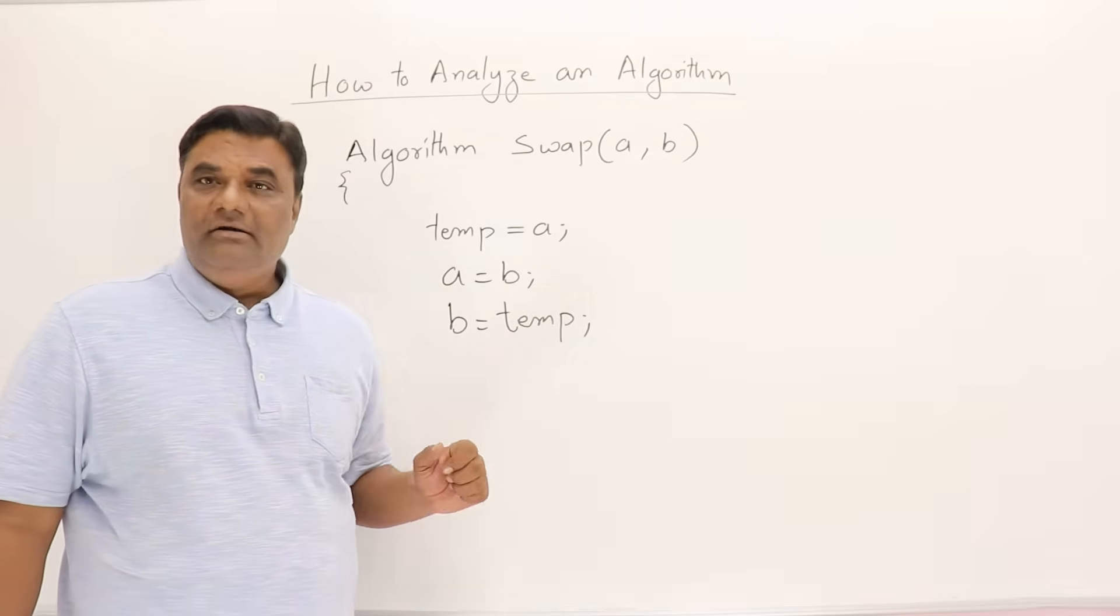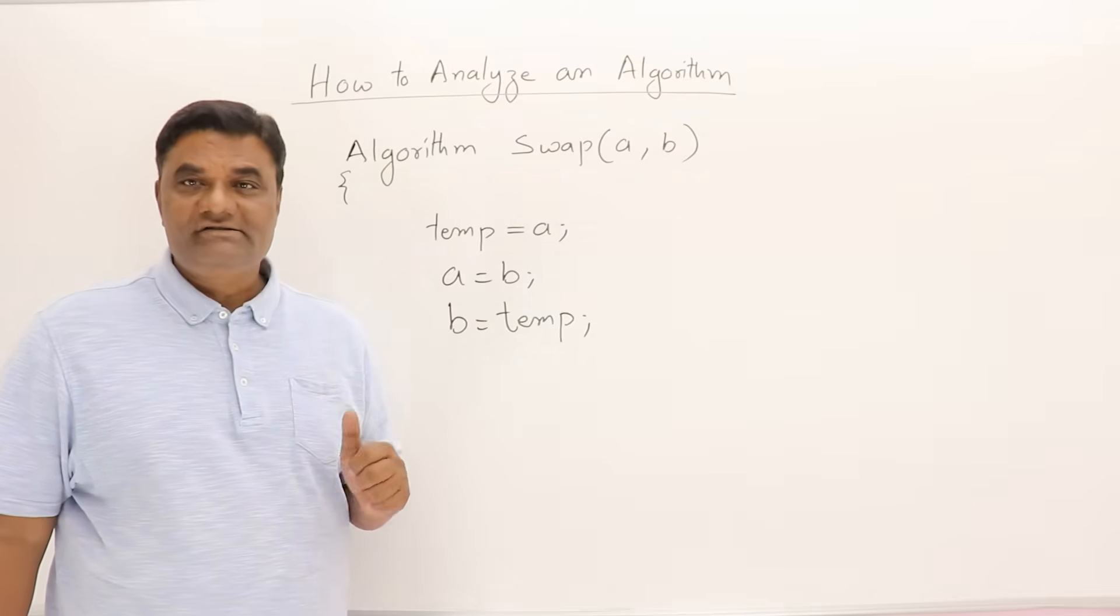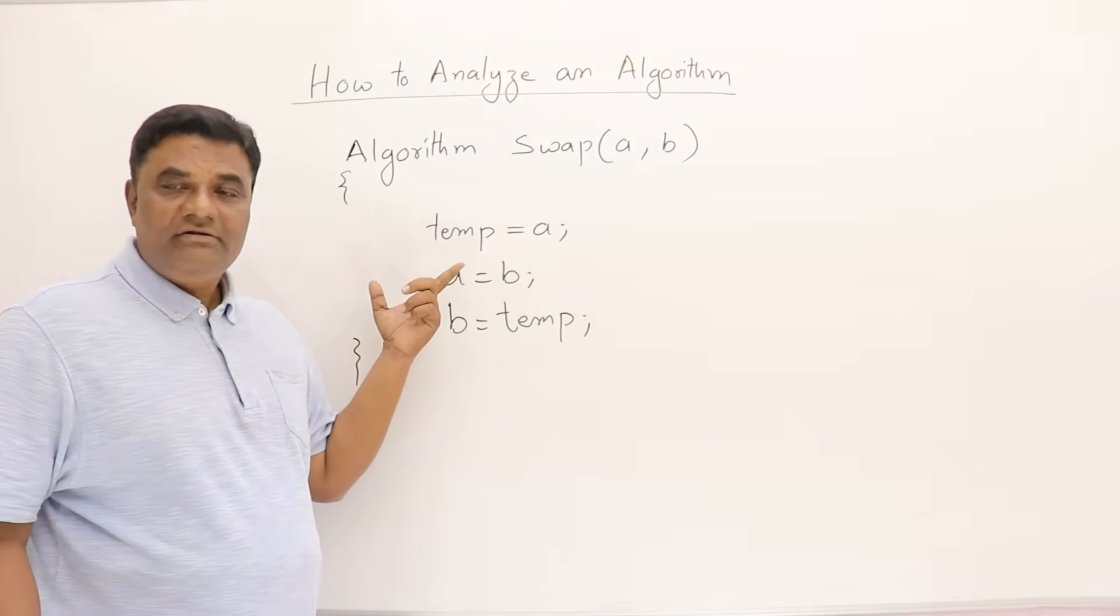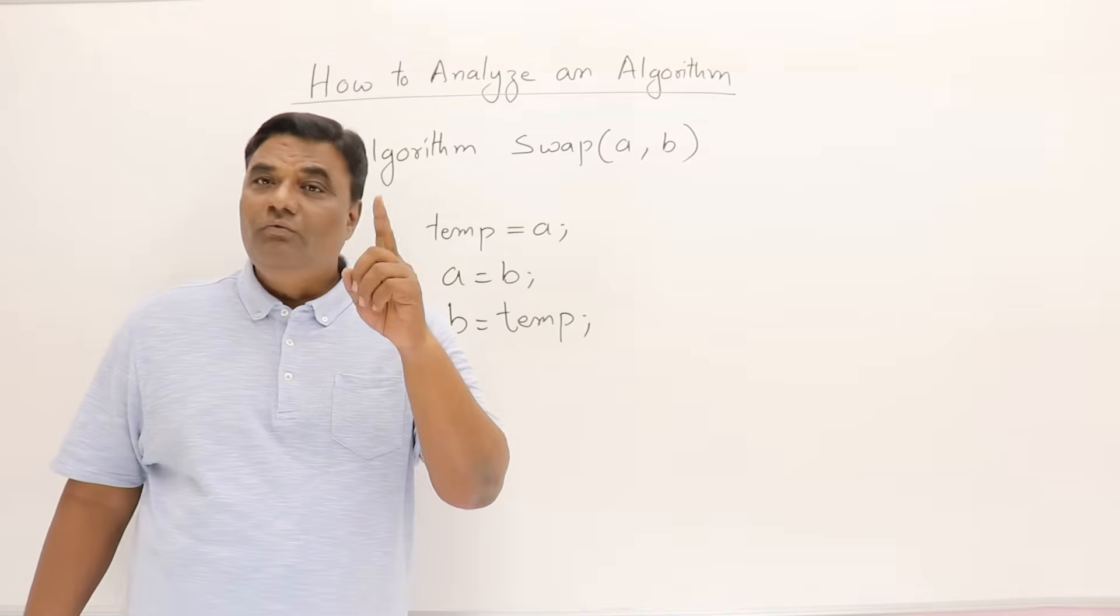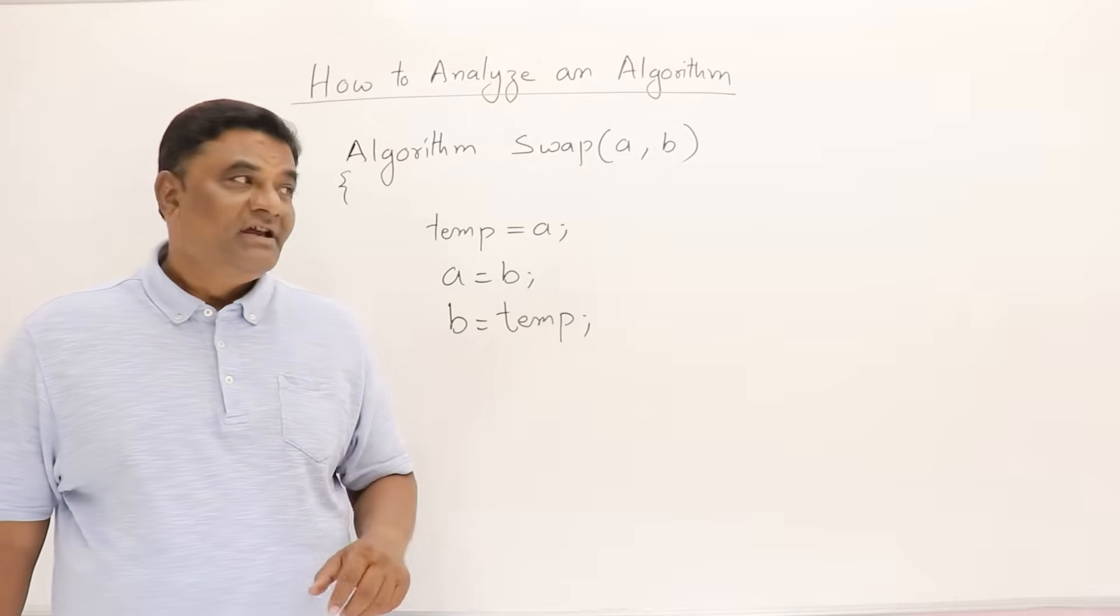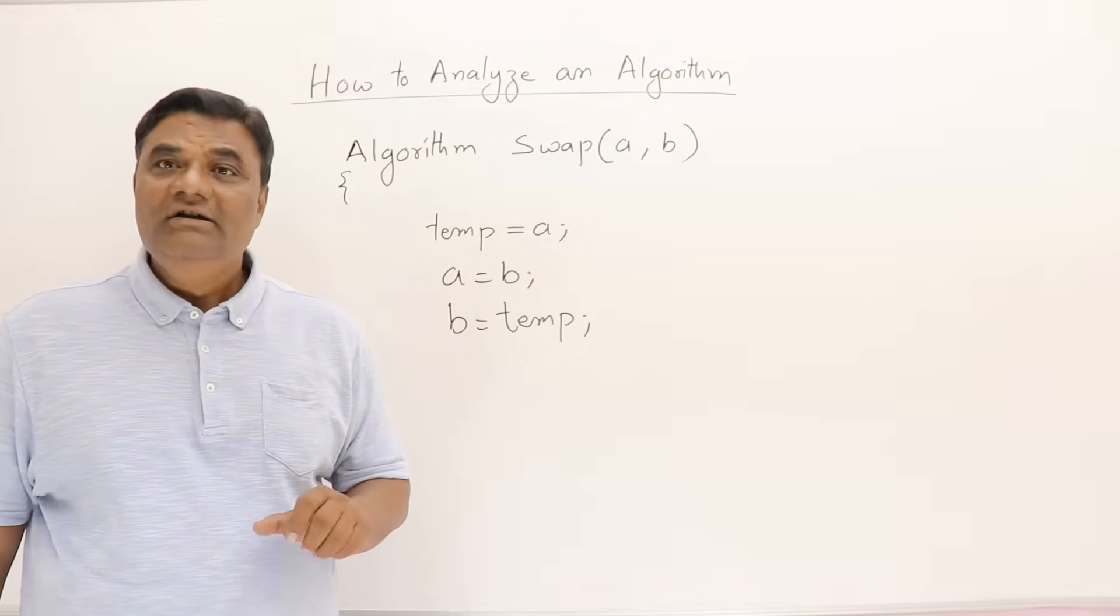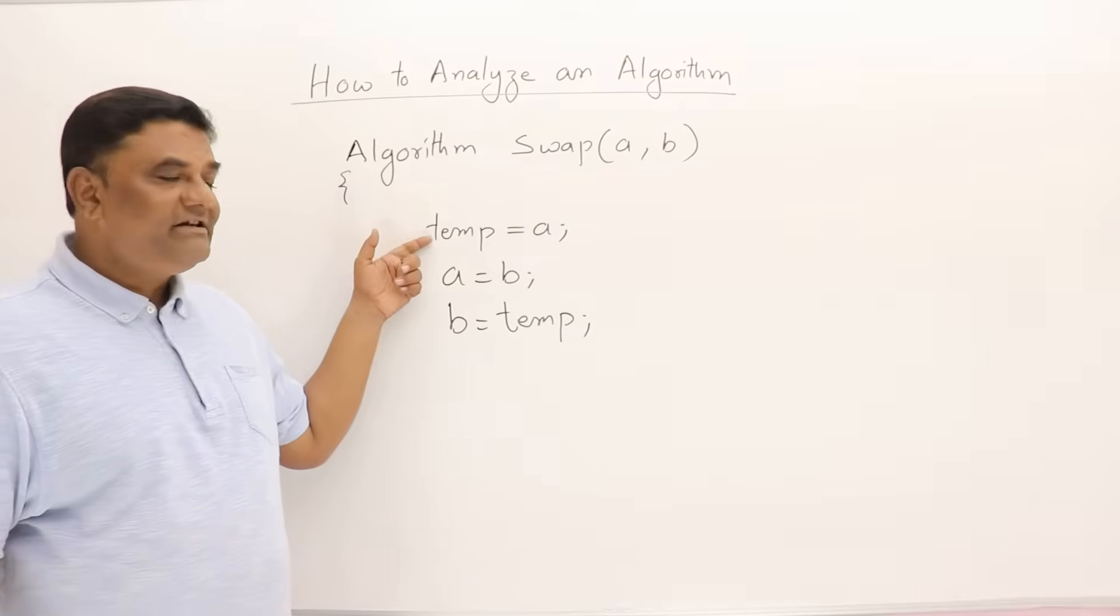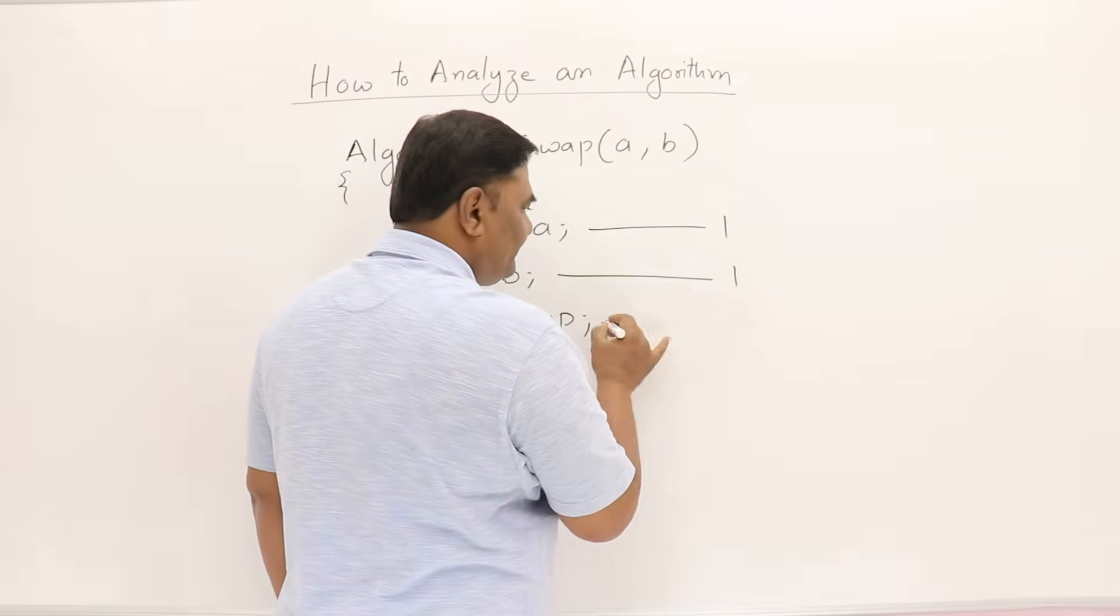Now let us see—I have taken one example to show you how we analyze an algorithm. For analysis purpose, we need to know the time. First we will do time analysis, then we will do space analysis. Now time means how much time this will take. This is not the watch time. We assume that every simple statement in an algorithm takes one unit of time. If the algorithm is calling another algorithm or using another procedure, then we have to analyze that also in detail. So here I assume it takes one unit of time, one unit of time, one. So total time is 3.